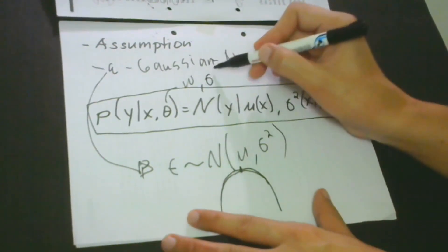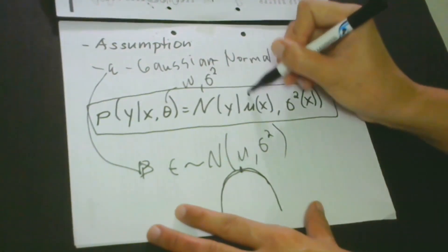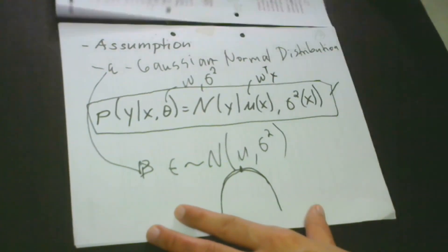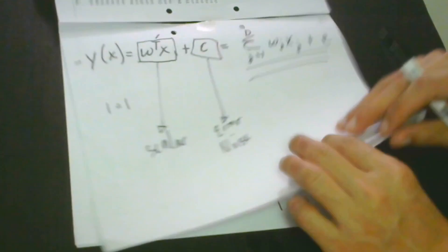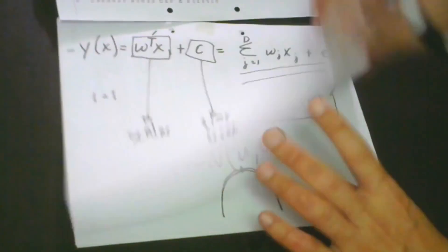So theta here is actually the parameters of our model. So we said that the parameters of our model are w and we have the variance.